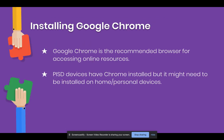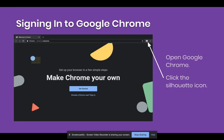Plano ISD devices already have Chrome installed. However, if you're using a home computer or a personal device, you may need to install Chrome on the device. The instructions from Google on how to install Chrome on different devices is in the description below this video. Once you've installed Chrome, open it on your device and you'll be online.